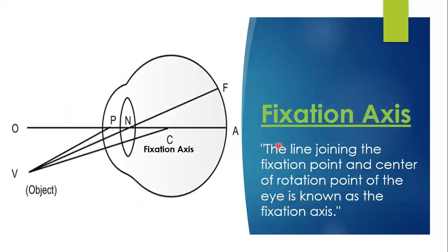Fixation axis. You can see over here — this is the fovea. The line joining the object to the fovea is the real axis. And the line that is joining from the object, or the point of fixation, to the center of the eye — the center of the rotation point is also the center of the eye — that is the fixation axis.